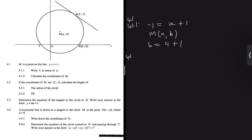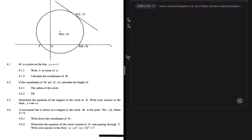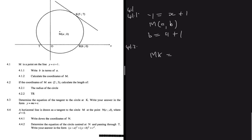Now we have 4.1.2, which says calculate the coordinates of M. One way of doing it is saying that the distance from M to K equals the distance from M to R. We say this because these two are radii.